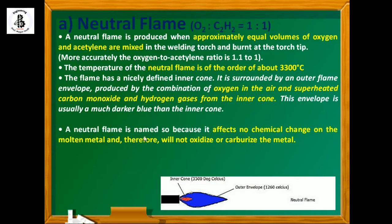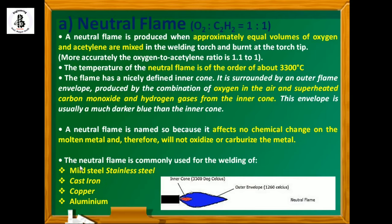A neutral flame is named so because it affects no chemical changes onto the molten metal and therefore will not oxidize or carburize the metal. The neutral flame is commonly used for welding onto mild steel, stainless steel, cast iron, copper, and aluminum. So this will be all for neutral flame.